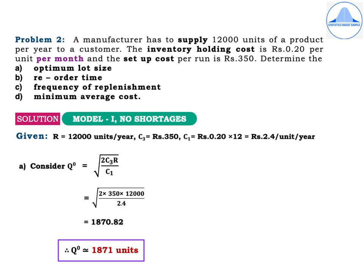This is Model 1 without shortages. Given: R = 12,000 units per year; C₃ = Rs.350 (setup cost); C₁ is given as Rs.0.20 per unit per month. Since demand is in units per year but C₁ is per month, we convert: C₁ = 0.20 × 12 = Rs.2.4 per unit per year. Always check the problem and make the necessary unit conversions.